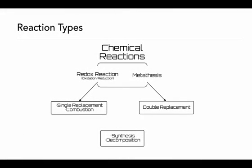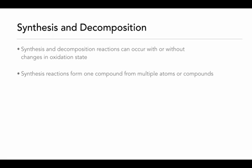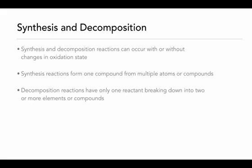This is our last video in the series dealing with reaction types. In this video we're going to look at synthesis and decomposition reactions. Both of them are very similar to each other — they're just going in opposite directions. They aren't classified as redox reactions specifically because they can occur without having a change in oxidation state. Synthesis reactions are easy to identify because you're going to have one compound form from multiple atoms or compounds. Decomposition reactions are just the opposite: you're going to have one compound break down into multiple elements or compounds.